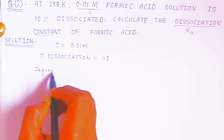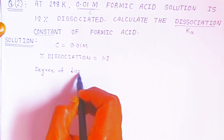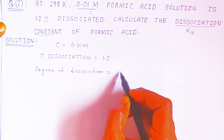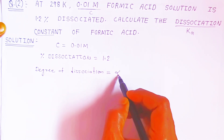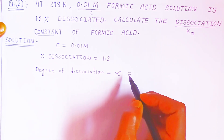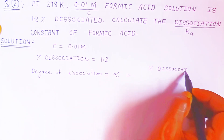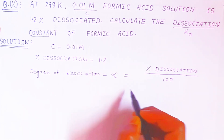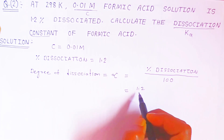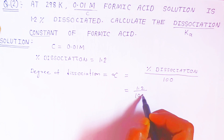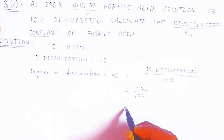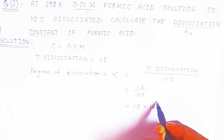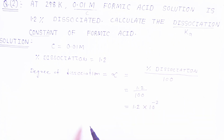The degree of dissociation is represented by the symbol alpha (α). It is nothing but the percent dissociation divided by 100. Here, percent dissociation is 1.2, so we divide by 100. This gives us 1.2 × 10⁻², since 100 in the denominator becomes 10² in the denominator, i.e., 10⁻² in the numerator.